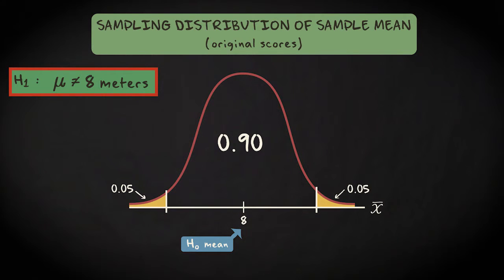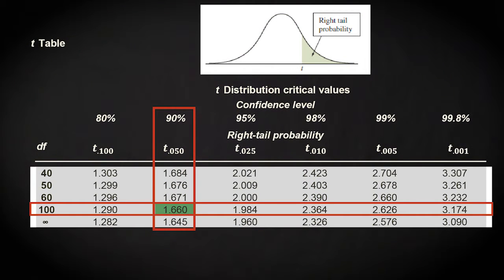We can look up the critical values in the t-table. The critical values are minus 1.66 and 1.66. So our distribution looks like this.